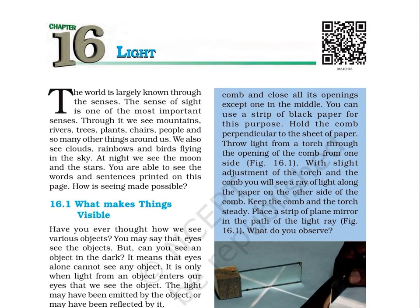The world is largely known through the senses. The sense of sight is one of the most important senses. Through it we see mountains, rivers, trees, plants, chairs, people and so many other things around us. We also see clouds, rainbows and birds flying in the sky. At night we see the moon and the stars. You are able to see the words and sentences printed on this page. How is seeing made possible?